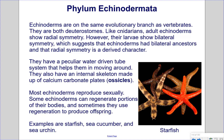Phylum Echinodermata. Echinoderms are on the same evolutionary branch as vertebrates; they are both deuterostomes. Like cnidarians, adult echinoderms show radial symmetry. However, their larvae show bilateral symmetry, which suggests that echinoderms had bilateral ancestors and that radial symmetry is a derived character. They have a water-driven tube system for locomotion and an internal skeleton of calcium carbonate plates called ossicles. Most echinoderms reproduce sexually, and some can regenerate body portions to produce offspring. Examples are starfish, sea cucumber, and sea urchin. The name echinoderm means 'hedgehog skin' — echino for hedgehog, dermata for skin.